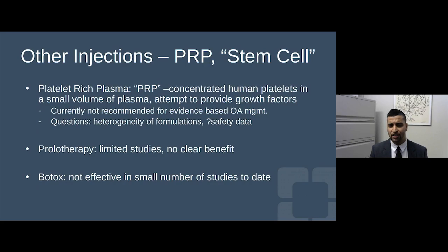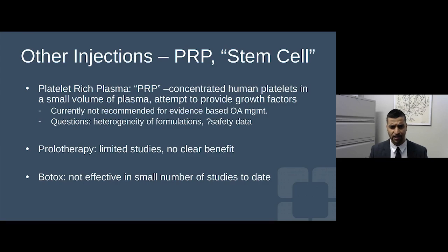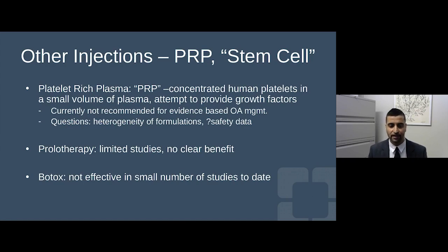PRP or platelet-rich plasma injections have made a lot of noise in recent years given the paucity of options for osteoarthritis. The idea is to provide growth factors to stimulate cartilage repair. However, we don't have large-scale studies to support PRP injections, and patients are receiving different formulations, making generalizations hard. There is also prolotherapy, where joints are injected with dextrose to stimulate the immune system's healing response, but there are limited studies and no clear benefit established.